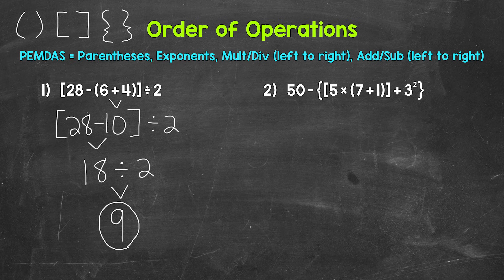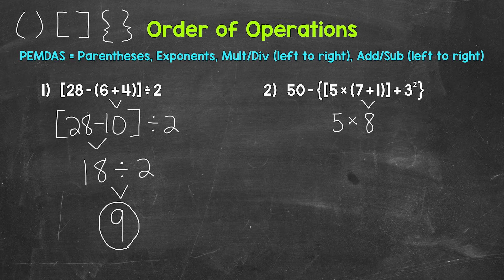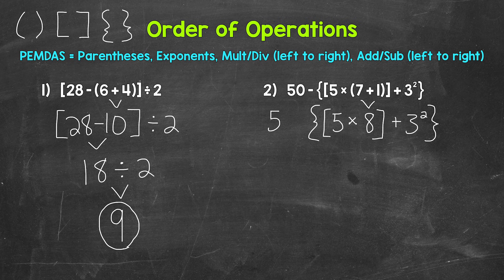We have multiple grouping symbols here — parentheses, brackets, and braces — so we need to start with the innermost group, which is these parentheses. We have 7 plus 1 within those parentheses. 7 plus 1 is 8. Bring down everything we did not use: 5 times 8 within brackets, plus 3 squared, all within braces, and then 50 minus whatever we get within those braces.